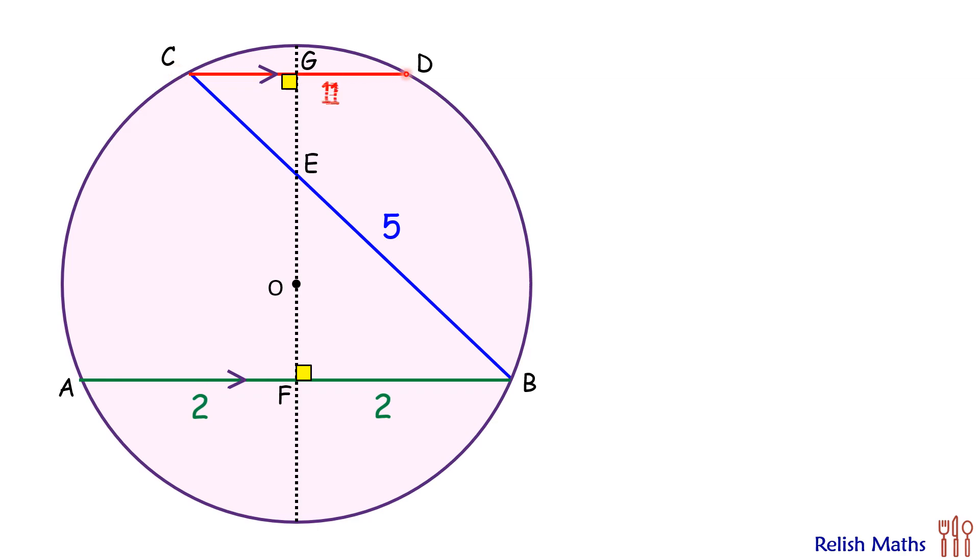Here CG and GD will be 1 centimeter each. At angle E, these are vertically opposite angles. So in triangle CGE and triangle BFE, two angles are equal. Thus, by angle-angle similarity, both triangles are similar.